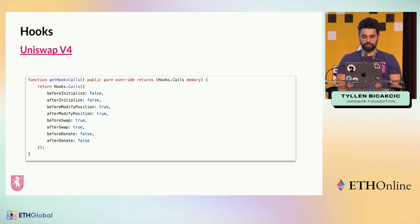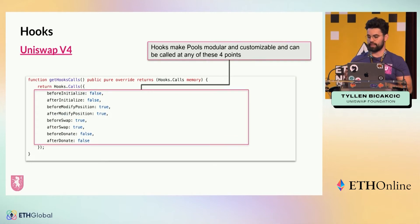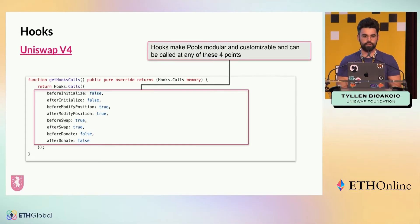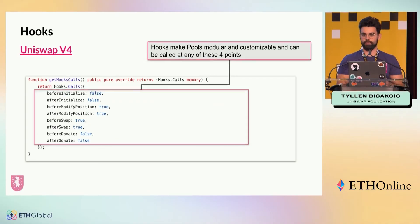Hooks can be called at four different action points within the Uniswap protocol: before or after you create a pool, before or after a position is modified for an LP, before or after a swap occurs, and before or after a donate. Donate is also a new feature in v4 where you can give fees to LPs in a pool — basically donating to them and incentivizing them if they're staying within a certain range of liquidity. You can give them fees to maintain in that range. There are lots of cool liquidity mining incentives that could be created from this.